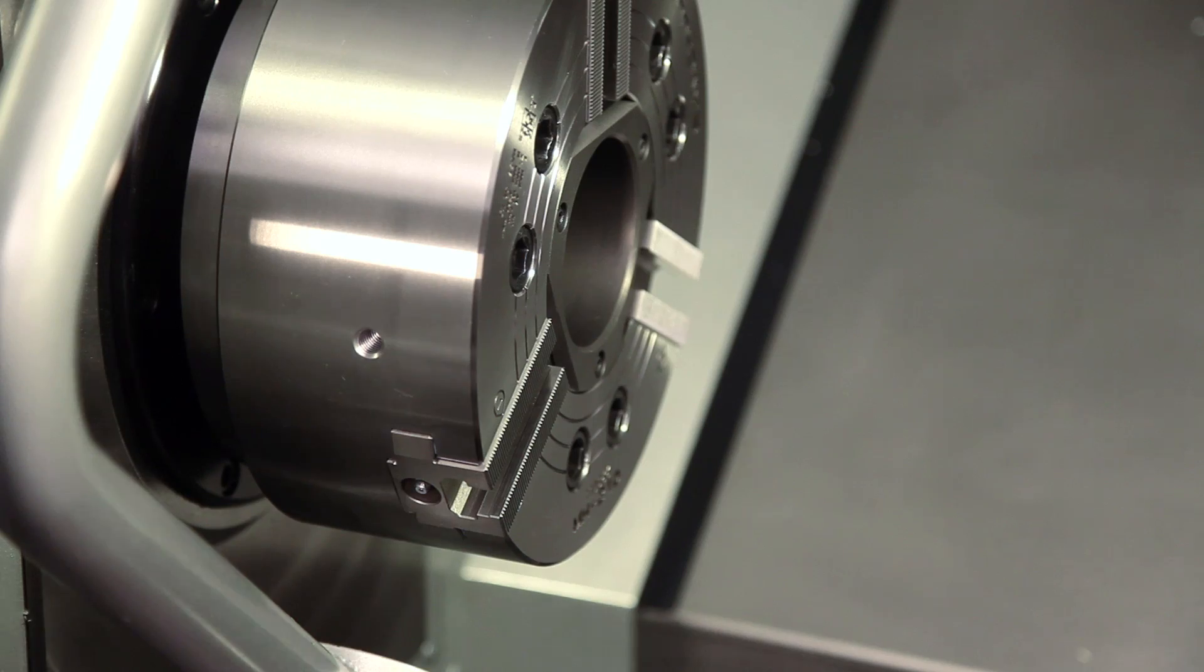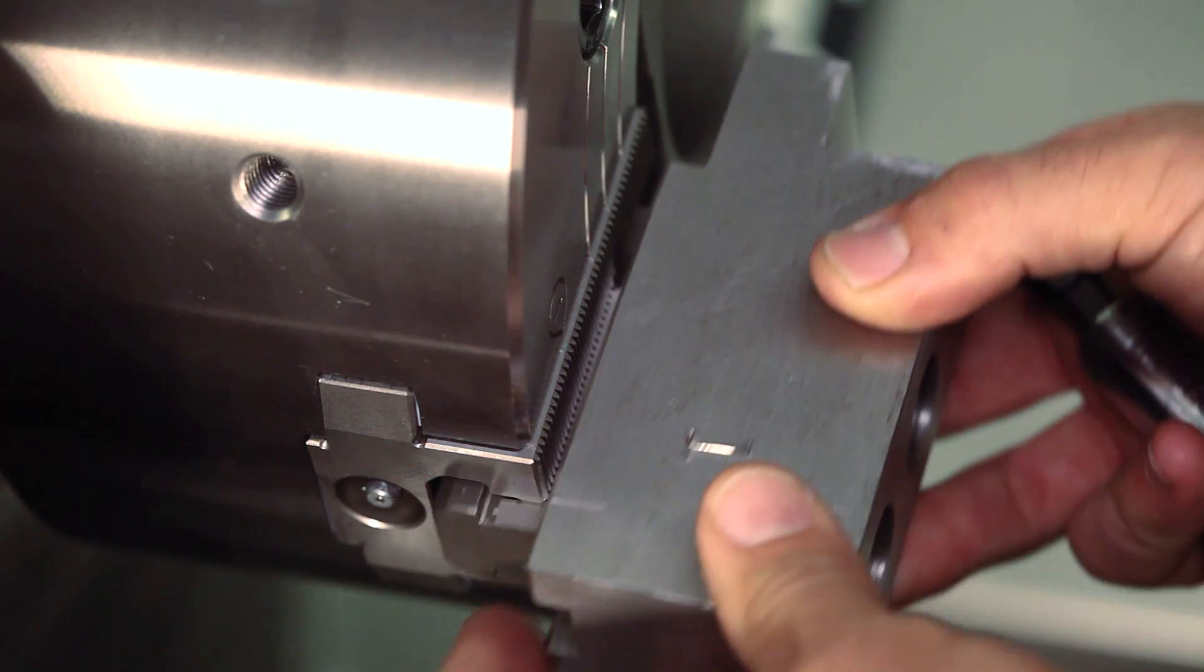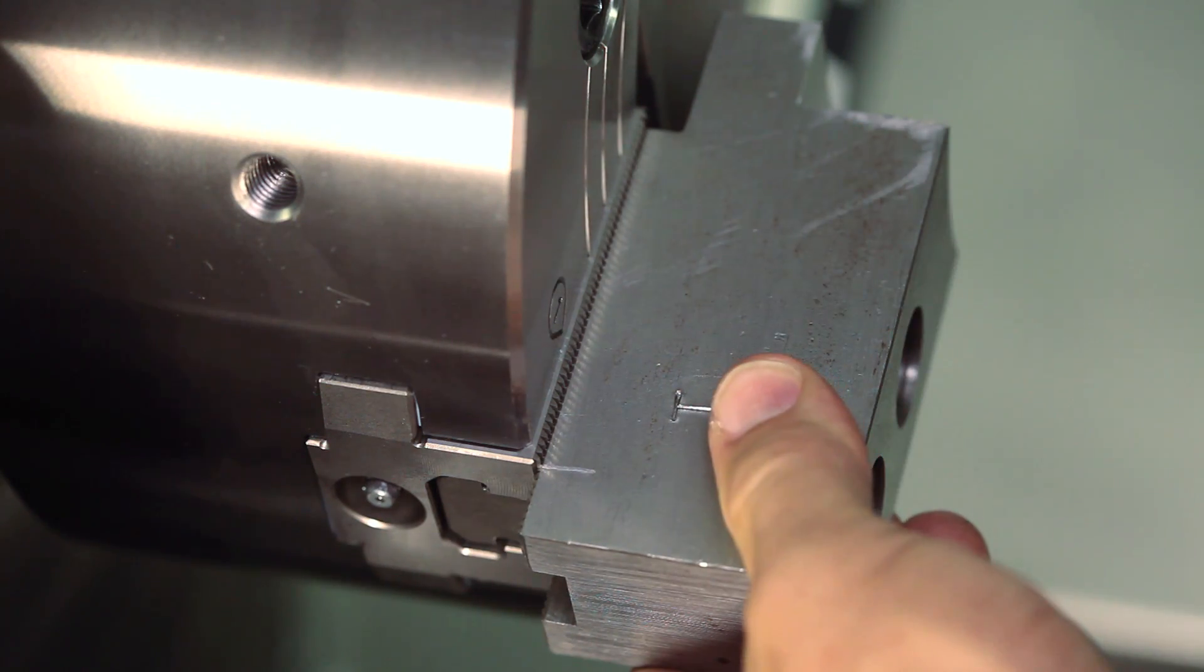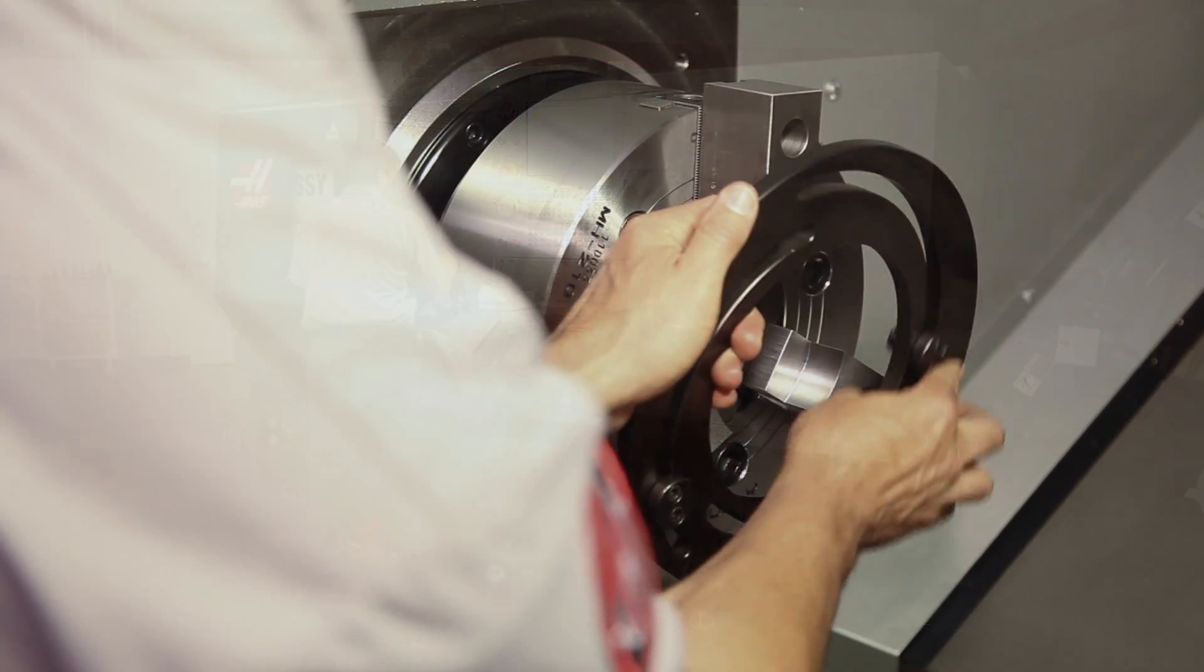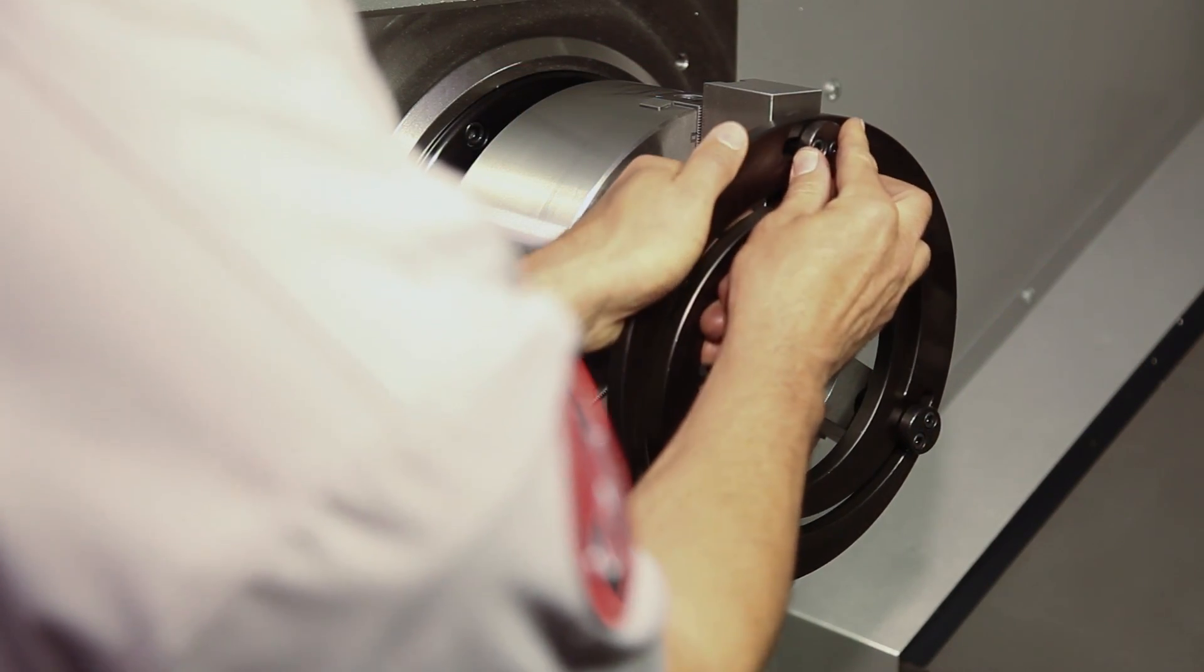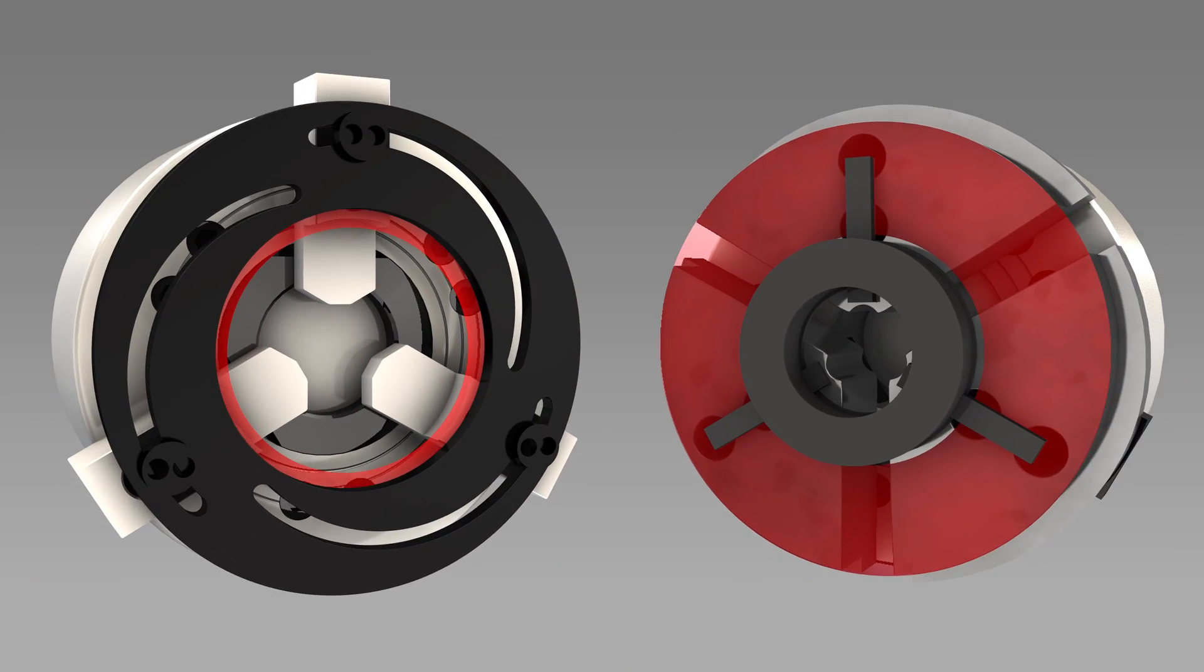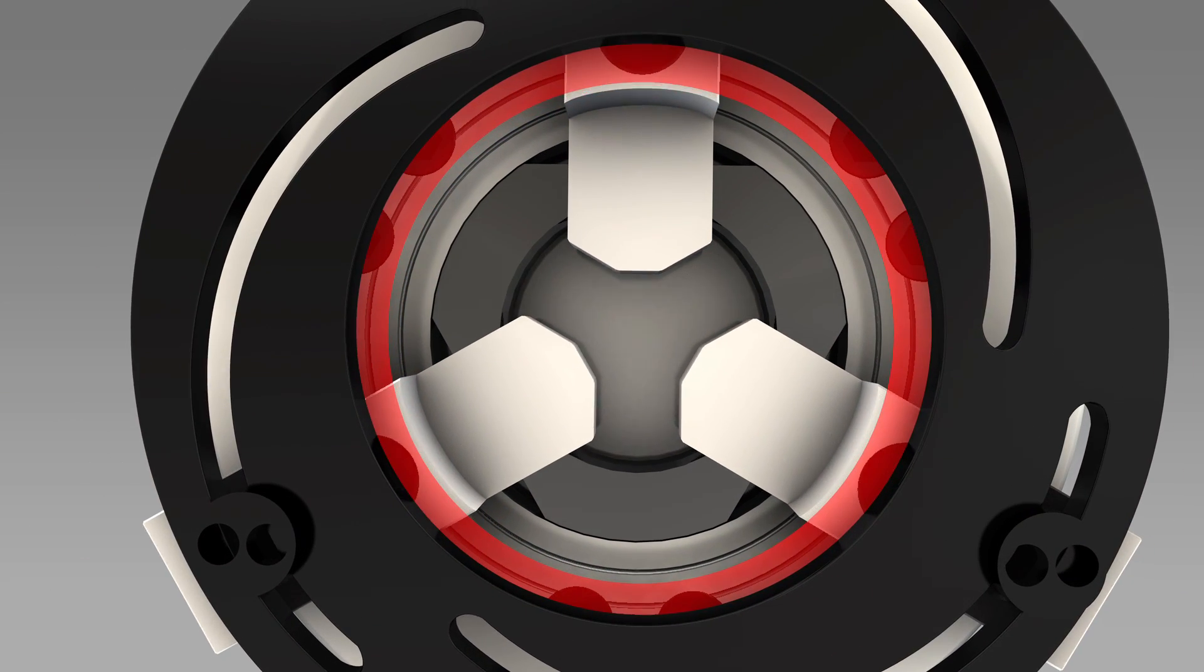Using the scribed reference marks, Andrew mounts the jaws in the exact same position as they were before. Since the idea is to machine away material to correct the jaw inaccuracies, we need to clamp OD gripping jaws to just slightly smaller than the workpiece outer diameter.